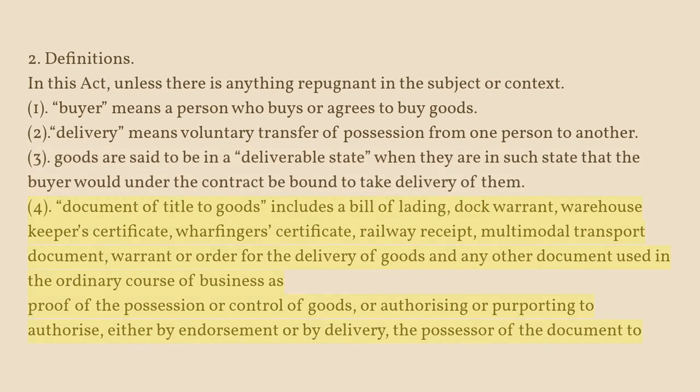(4) Document of Title to Goods includes a bill of lading, dock warrant, warehouse keeper's certificate, wharfinger's certificate, railway receipt, multimodal transport document, warrant or order for the delivery of goods, and any other document used in the ordinary course of business as proof of the possession or control of goods, or authorizing or purporting to authorize, either by endorsement or by delivery, the possessor of the document to transfer or receive goods thereby represented.